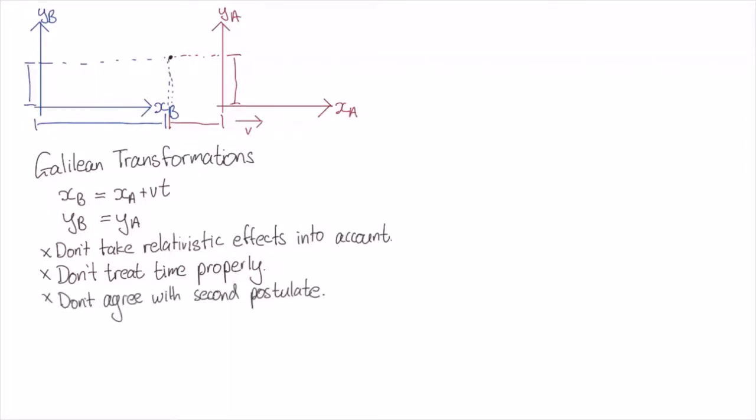Lastly, the Galilean transformations don't agree with the second postulate. If I was running at half the speed of light and turned on a torch pointing forwards, emitting photons at the speed of light, Galilean transformations would suggest that someone watching me would see those photons moving at 1.5 times the speed of light. However, the second postulate says that everyone agrees on the speed of light, regardless of the initial reference frame.